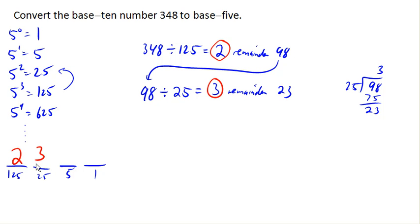Next, we'll bring down 23. 23 divided by our next lowest value, which is 5, gives us 4 with a remainder of 3.